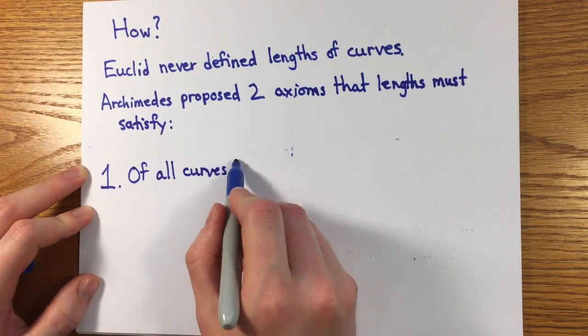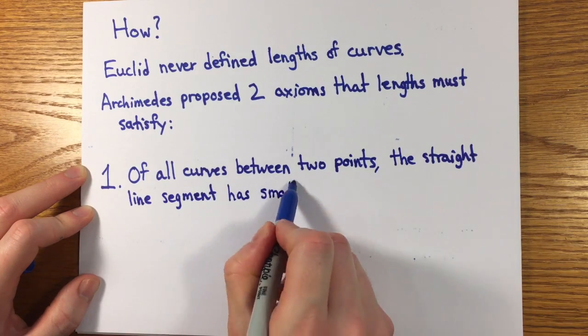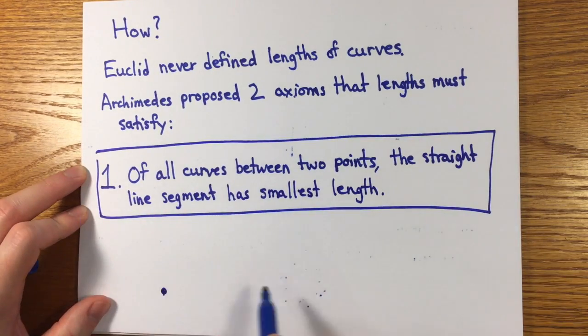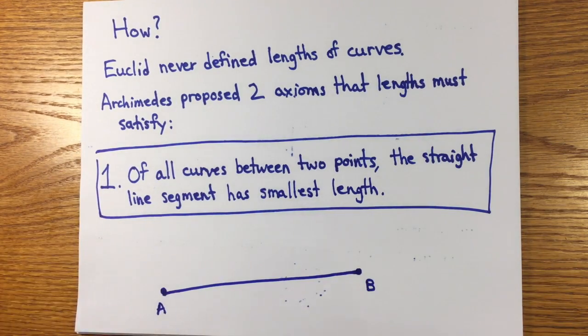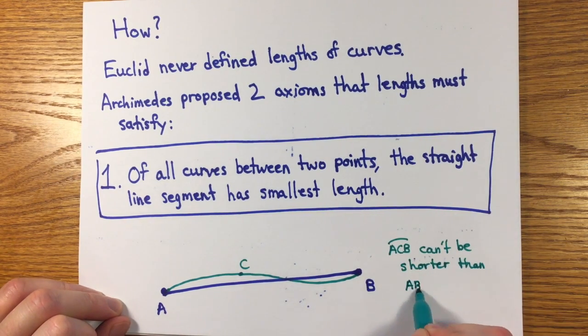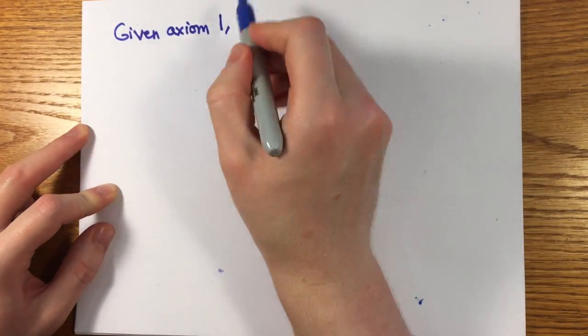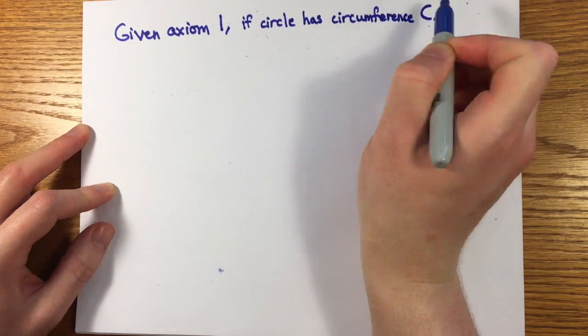The first axiom of Archimedes is that of all curves between two points, the straight line has the smallest length. It's certainly plausible, and Archimedes knew that this statement could be proved for all curves made up of straight lines or polygonal paths, but the point was to insist that this hold for all curves.